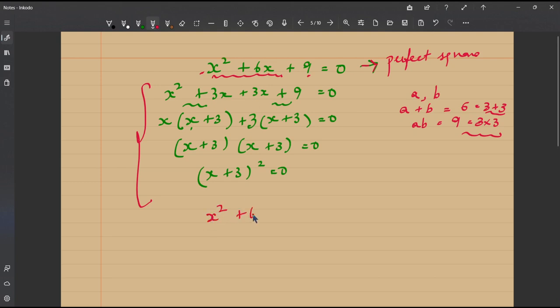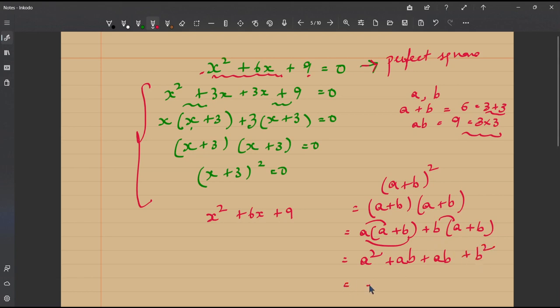Let me rewrite x squared plus 6x plus 9 and what do we know about squares of polynomials? Now, just consider a plus b, a sum of any two variables. This is a plus b the whole squared. What is a plus b multiplied by a plus b? It is a multiplied by a plus b plus b multiplied by a plus b which is equal to a squared plus ab plus ba.